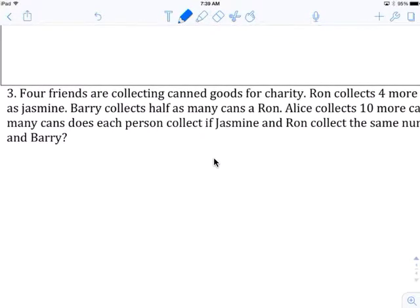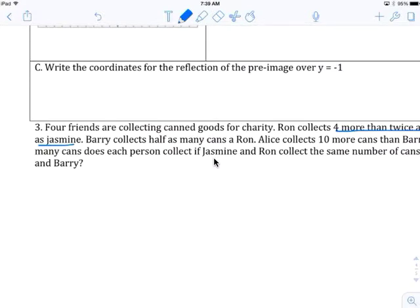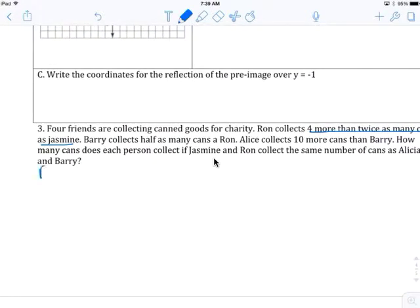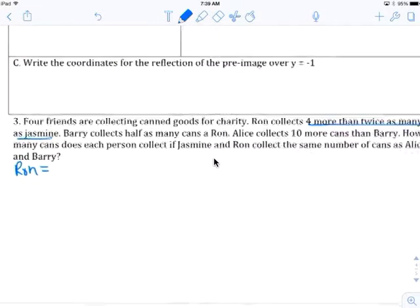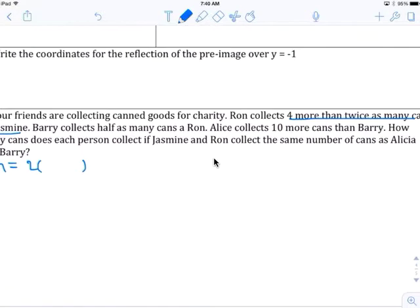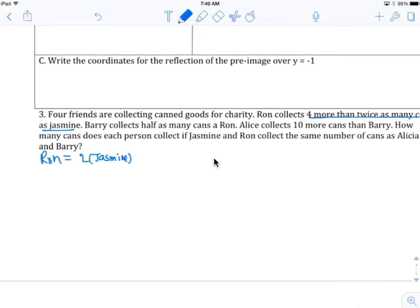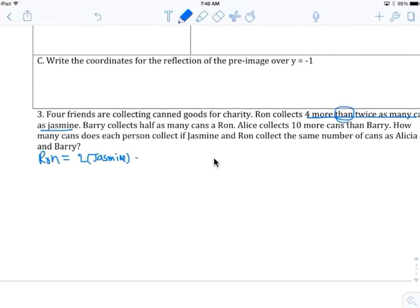Four friends are collecting canned goods for charity. Ron collects four more than twice as many cans as Jasmine. So here's Ron equals four more than twice. Twice is two times cans as Jasmine. Two times Jasmine. Twice is always two times. And then four more than. Then we flip. That's why we put the four in the back.